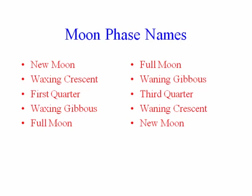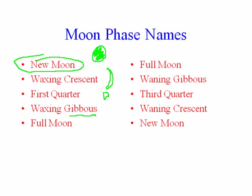The moon phase names are as follows. The cycle typically starts with the new moon phase. As the phase grows in size — the moon is always the same size, but at the new phase the side facing Earth is dark — then we see a little crescent, then half full, then more than half full, and then it becomes full. That term for more than half full is called gibbous.